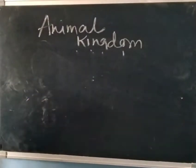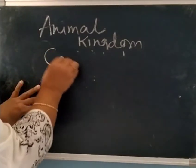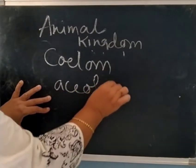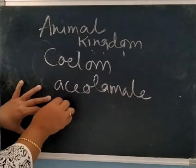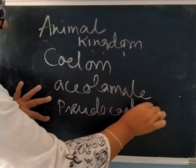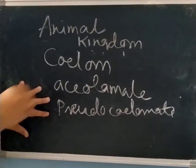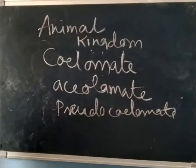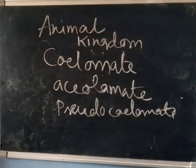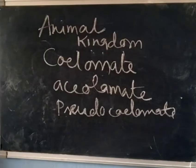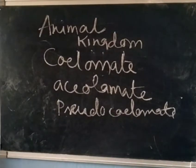The next criteria is the presence of coelom. If a species is acoelomate, that means without coelom. Then there is pseudocoelomate, meaning a false coelom is present, and coelomate means a true coelom is present. The coelom is the body cavity between the body wall and gut wall which is lined by mesoderm.